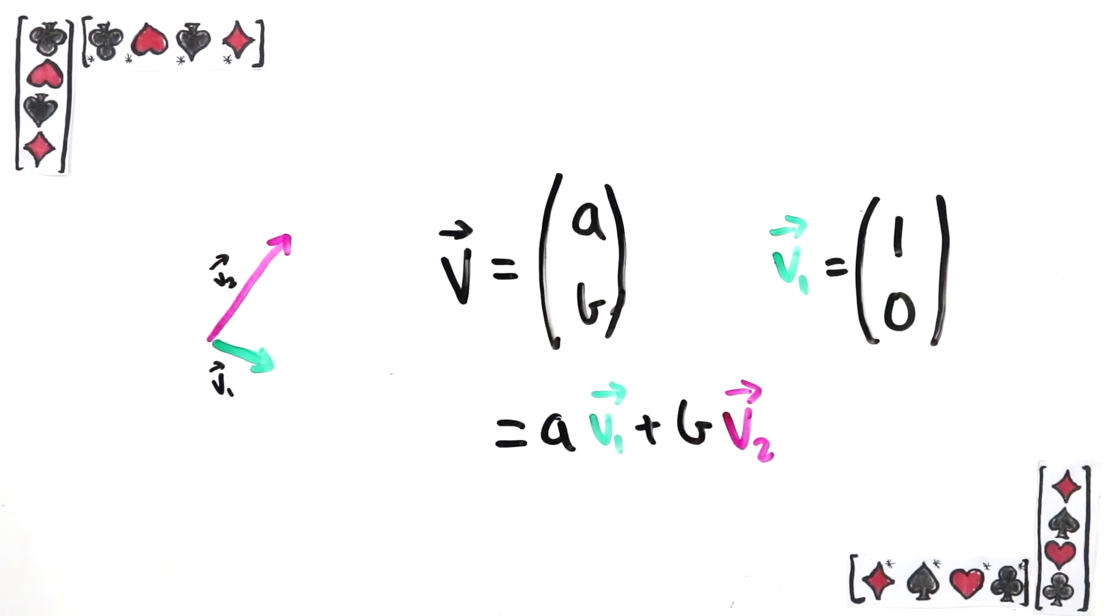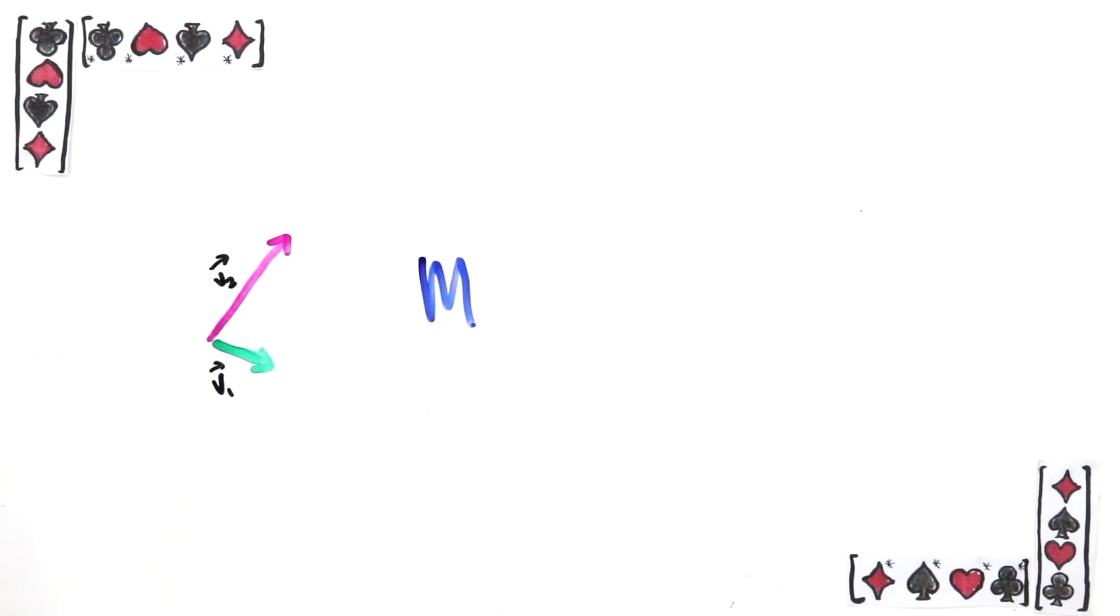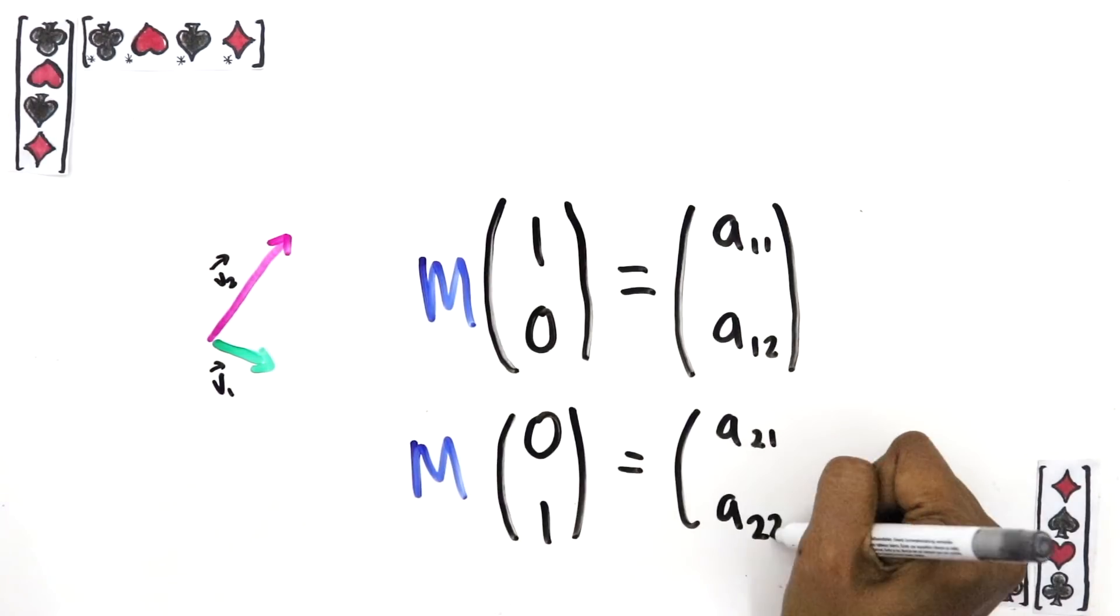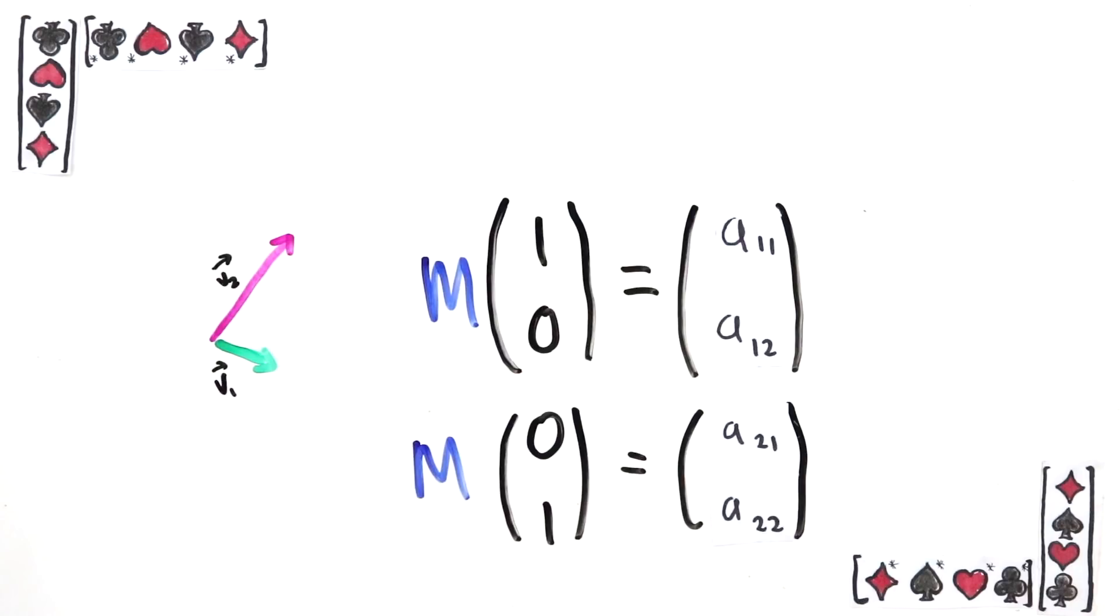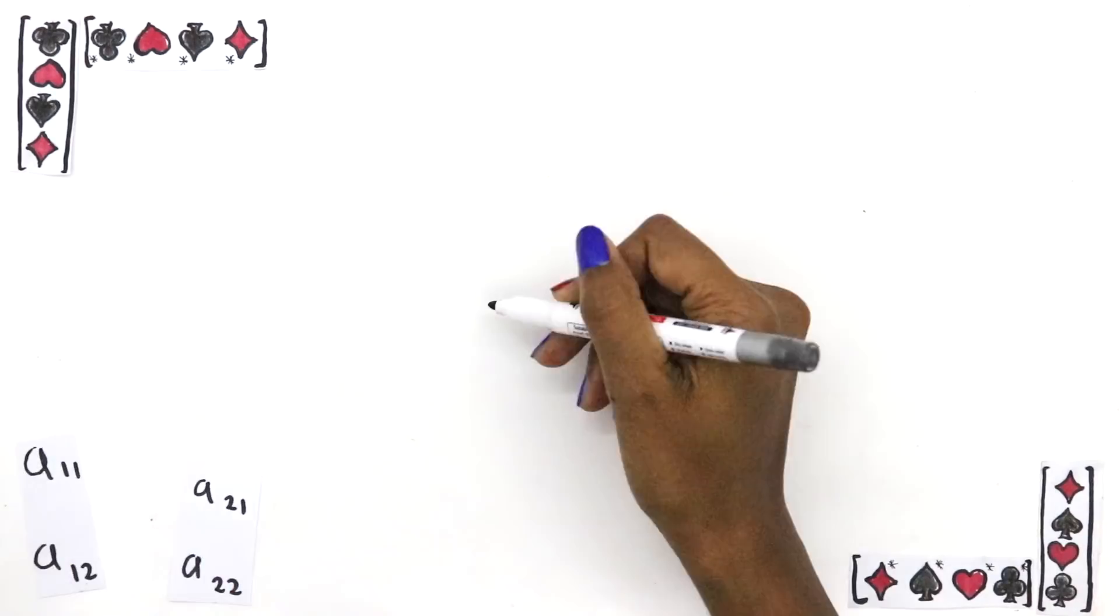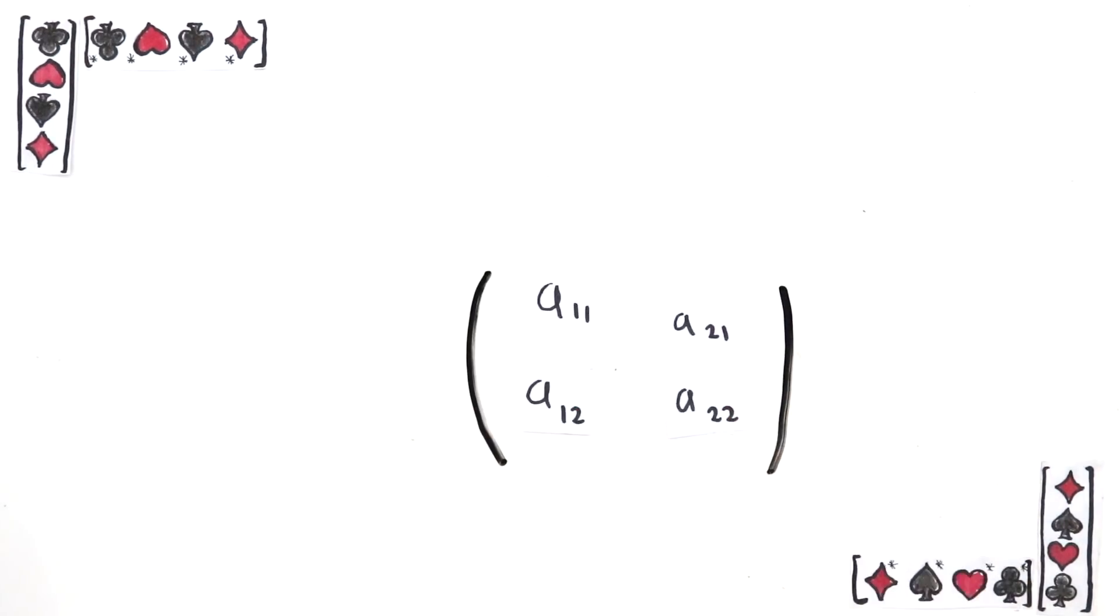Say I apply my linear transformation to the first basis element and I get this column vector, and I do this for each basis vector. As I said before, this is everything I need to know about a linear transformation. So I want to store this information compactly. So I store it in a matrix like this. And that is all a matrix really is.